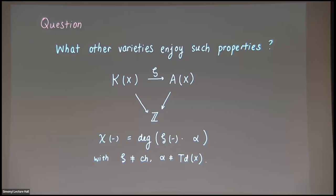Do you know a simple example of a smooth proper variety for which this does not work — for which the answer to this question is negative? Good question. I do not. Is there a case where there is more than one way of doing this? What do you think is unique when it exists? I also don't know about uniqueness. That would be interesting to ask — maybe that's related to the question about whether it's natural.